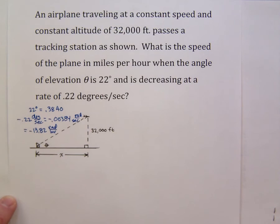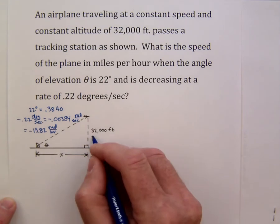And probably we also want to convert the 32,000 feet into miles and if we do that by dividing by 5280 we get that it is about 6.061 miles.